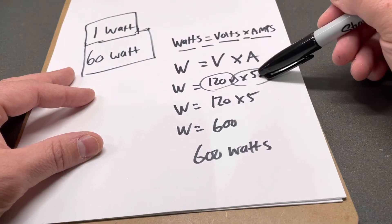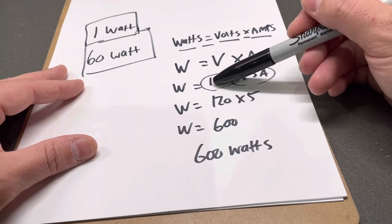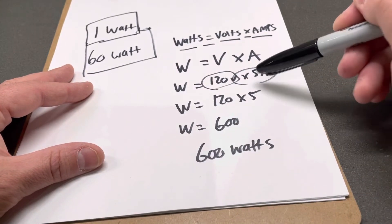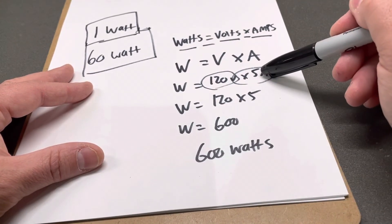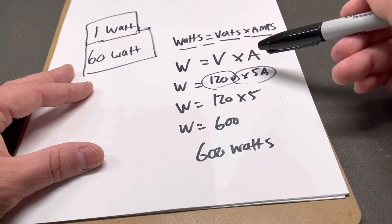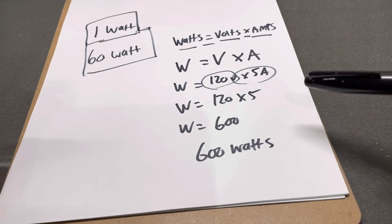For instance, if I knew that this had 600 watts and it had 5 amps, I could do 600 divided by 5 because it's the opposite of multiplication, and that would give me 120, which is the voltage. Very simple.